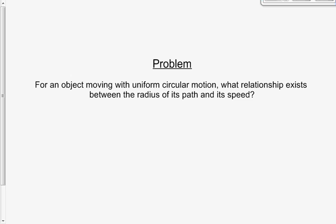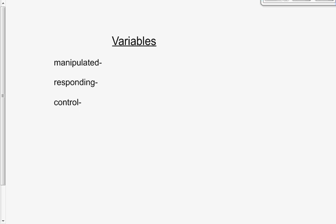We have to identify variables for this and all our other activities. There is a manipulated variable, a responding variable, and then a whole bunch of control variables. Based on this problem, tell me what the manipulated variable is — what are we going to change in this activity? We're going to change the radius of the circle. The manipulated variable is the radius. I'm not going to tell you what the responding variable is, but it doesn't take rocket science to figure it out. The responding is fairly obvious when you read the problem and know the manipulated is the radius. The control variables are everything else — come up with some good ones, there are a couple really important ones you don't want to miss.